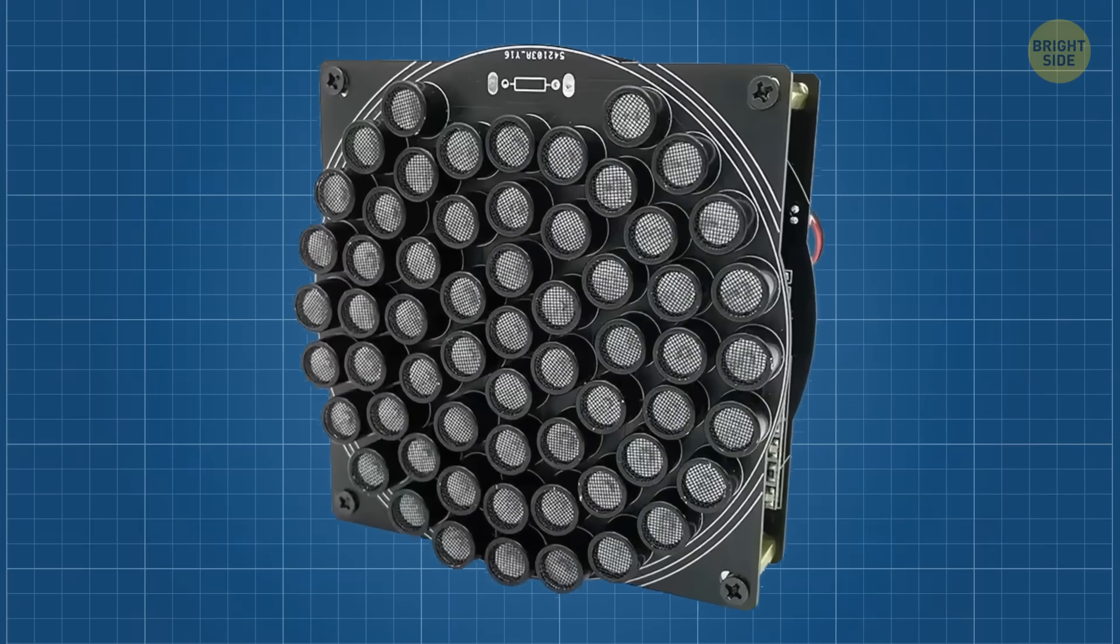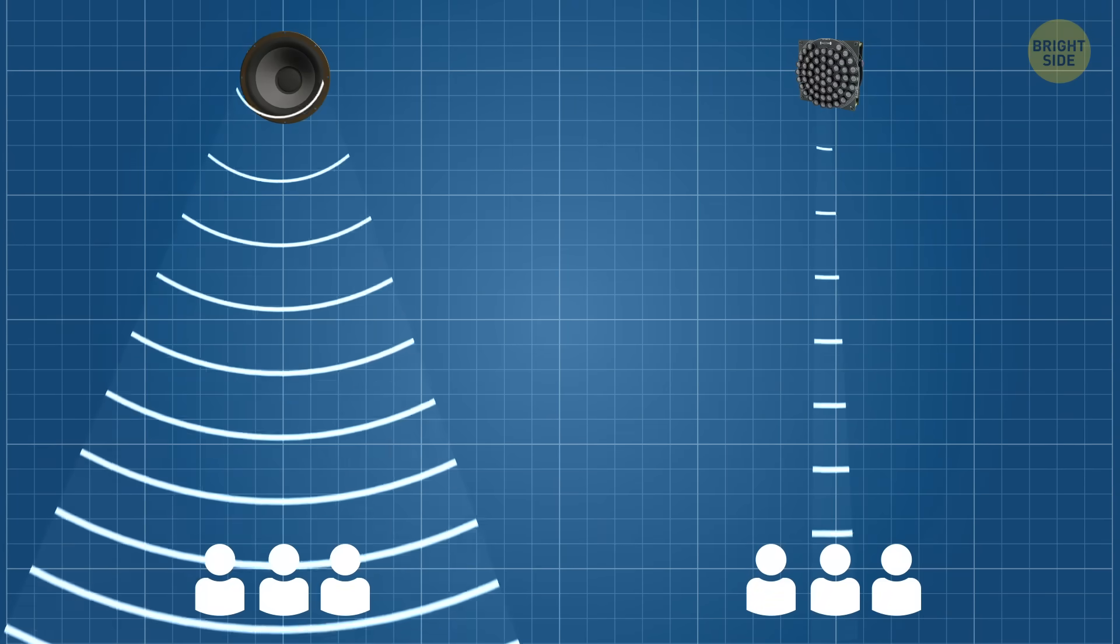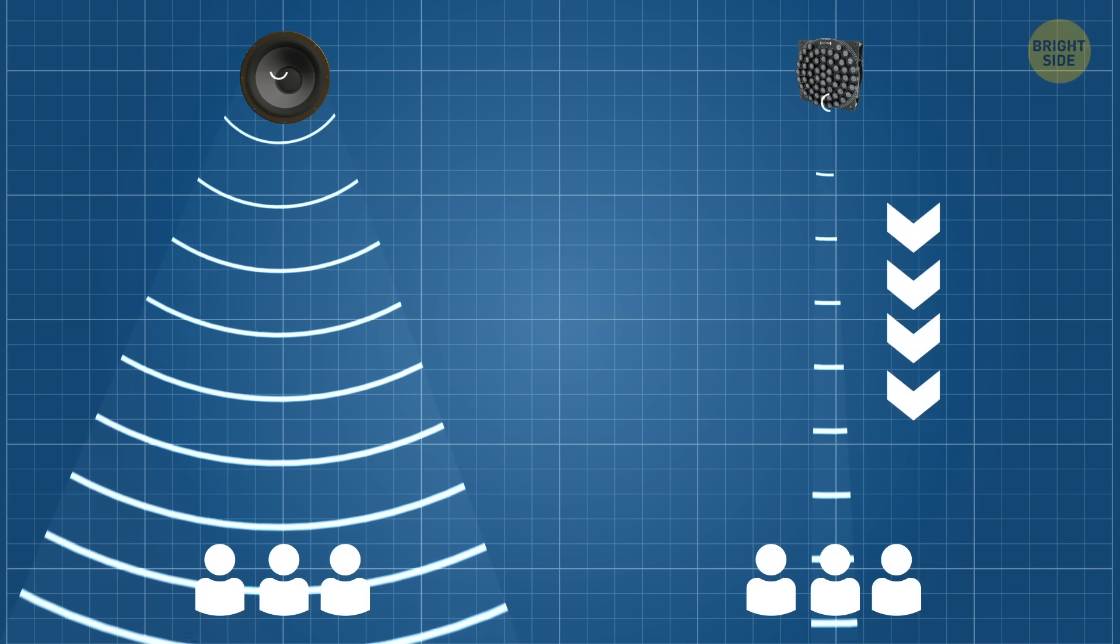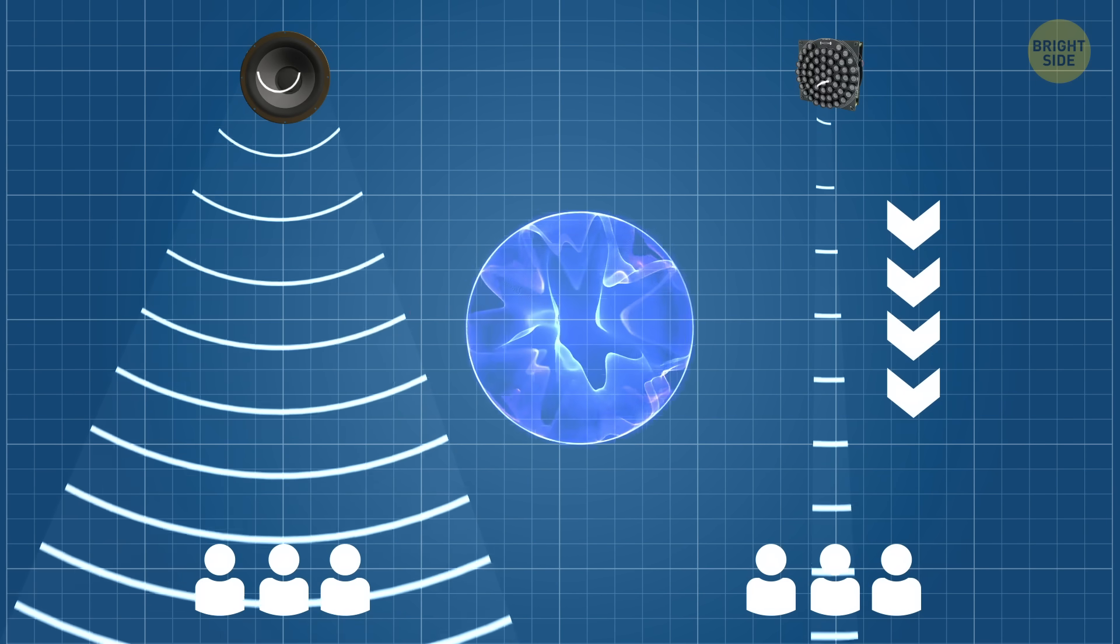Some devices, like parametric speakers, can send sound in one direction, like a beam. Even then, the sound is still heard along the whole path. It doesn't stay in one spot.